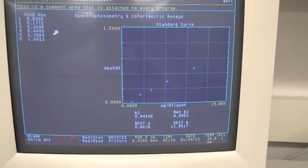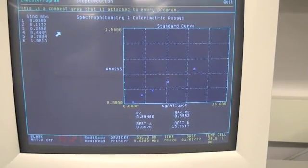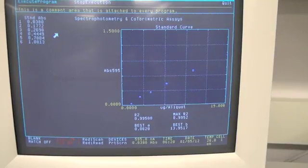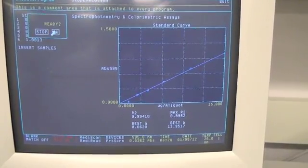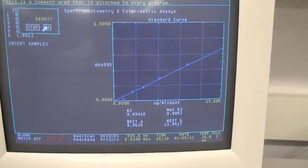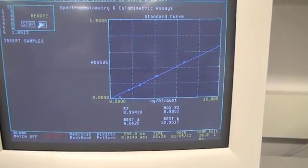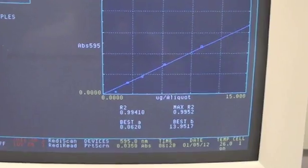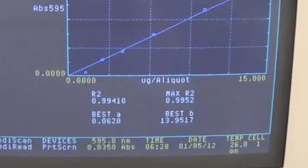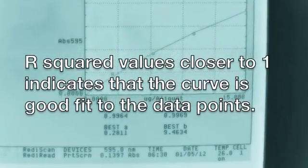You will then notice that the program initiates a curve fitting tool that establishes the trend of absorbance to the concentrations of the six standards specific to the ones you have prepared. R squared values are also provided to help you determine how well the data points fit to the hyperbolic trend.